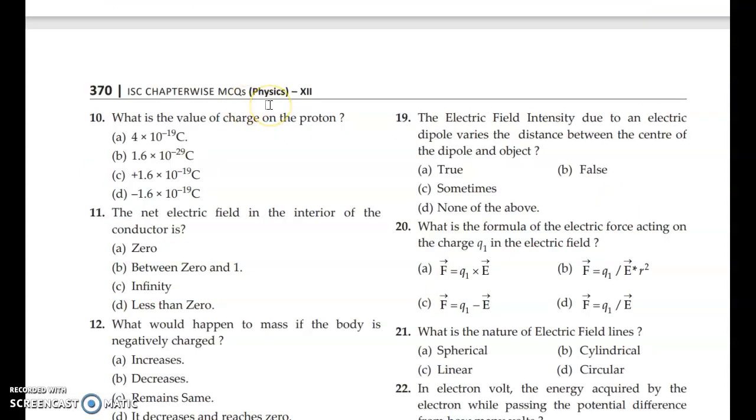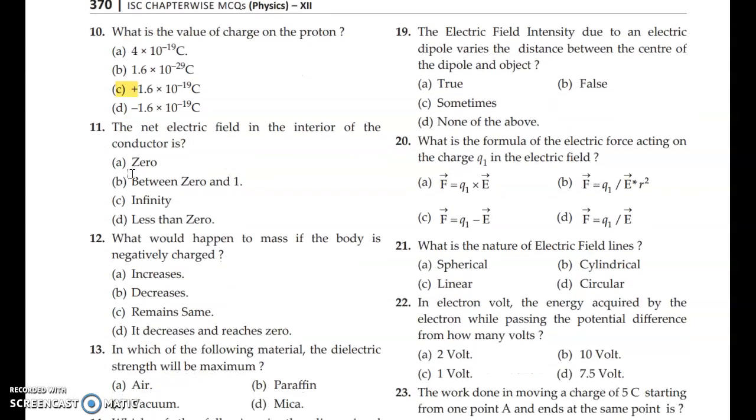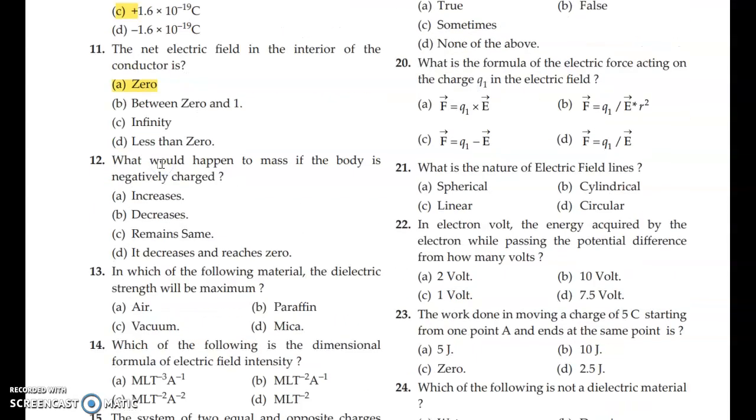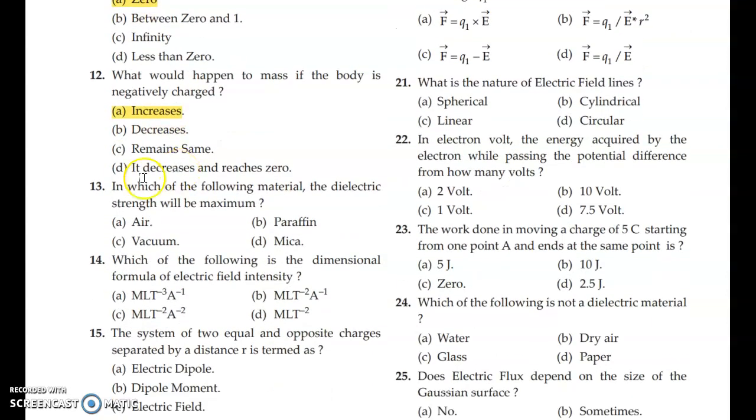What is the value of charge on the proton? Answer is option C. The net electric field in the interior of the conductor is zero. What would happen to mass if the body is negatively charged? Answer is option A, increases. If the body is negatively charged, mass increases due to the increase in number of electrons.